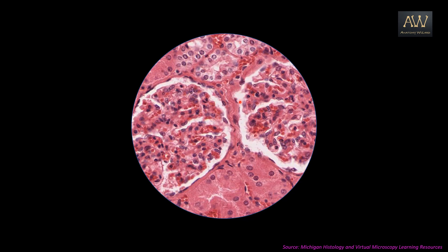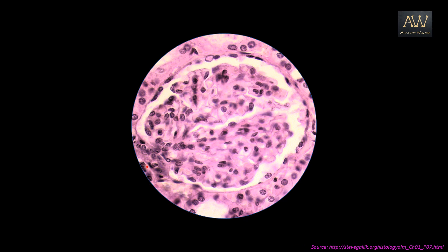Now let us zoom in a little bit more. If you can identify these flattened nuclei, you can understand that these represent the squamous epithelial cells which are at the junction of this free space and the tissue. This picture is a typical representation of the Bowman's capsule of the kidney. So this layer of epithelium is the parietal layer of the Bowman's capsule, and this free space is actually the urinary space. The tissue in the center is nothing but the glomerulus. The thing to look out for are the squamous epithelial cells forming the parietal layer of the Bowman's capsule.